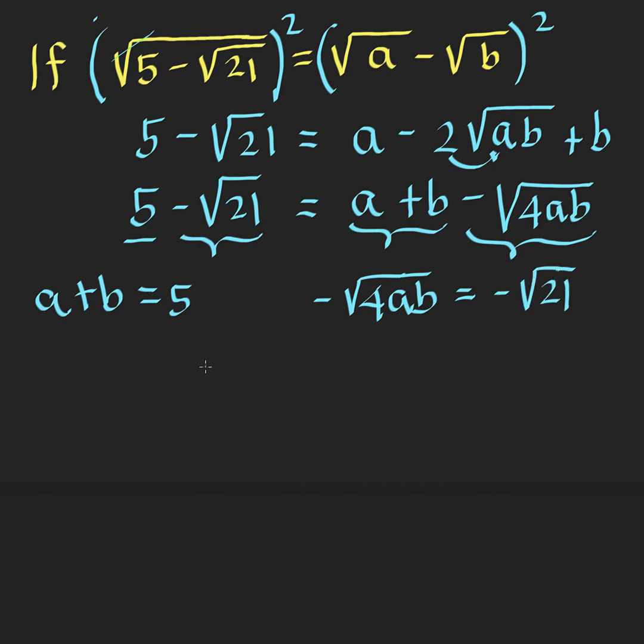I just wrote the variables at the left side. This implies that 4AB is equal to 21. So 4AB is equal to 21, and A plus B is equal to 5.